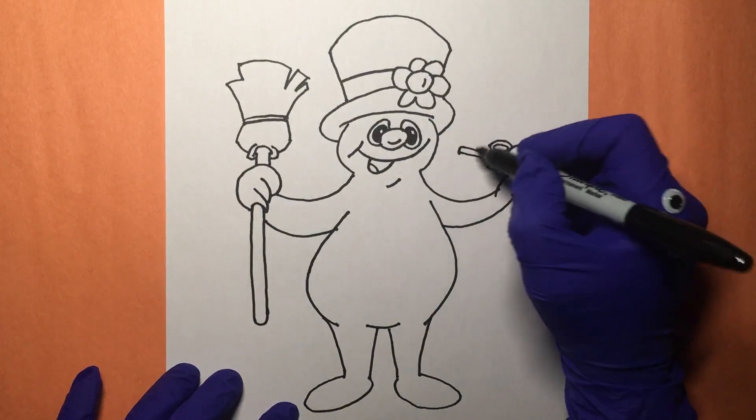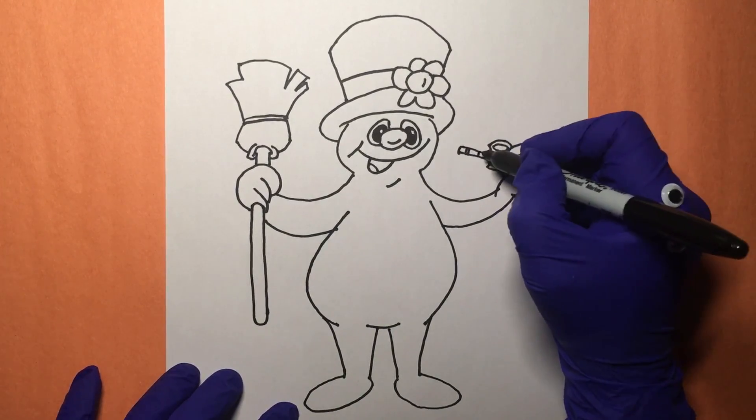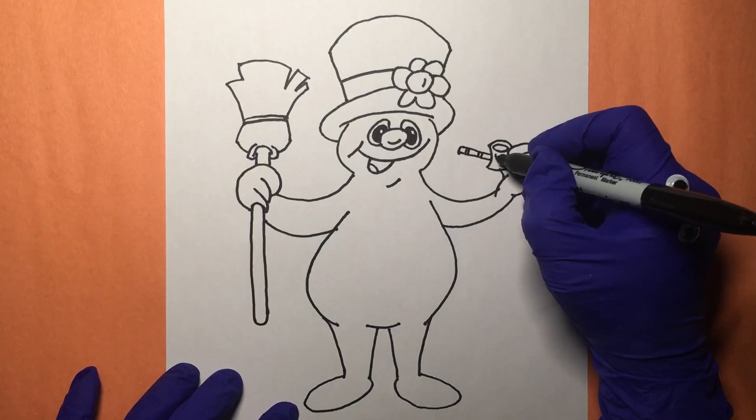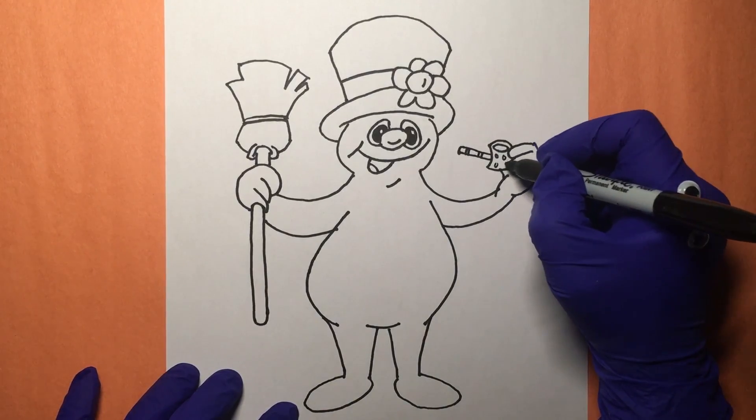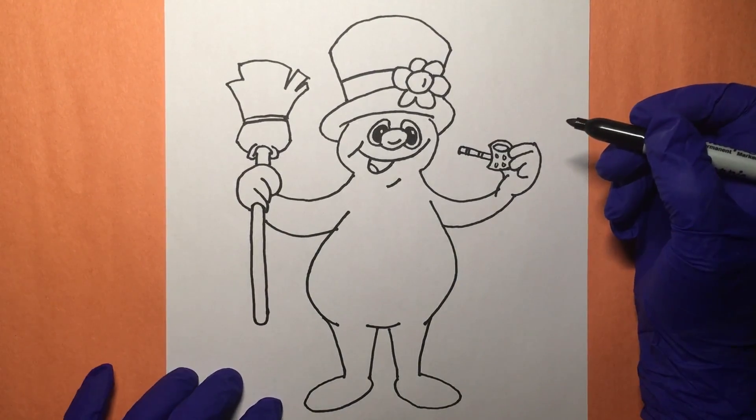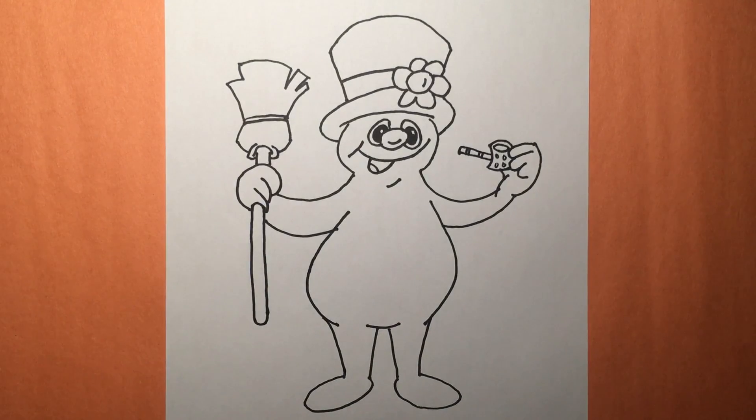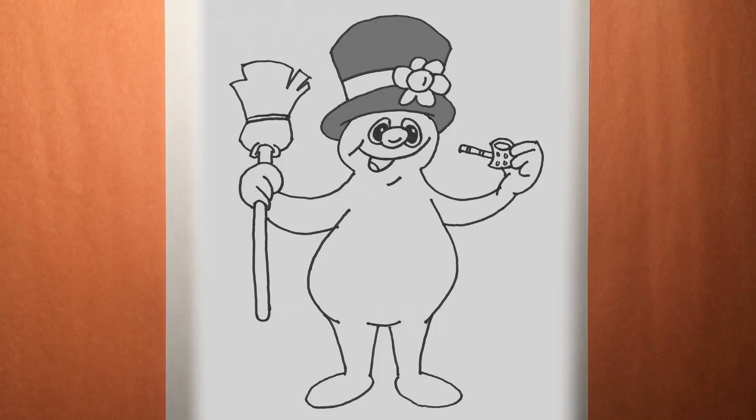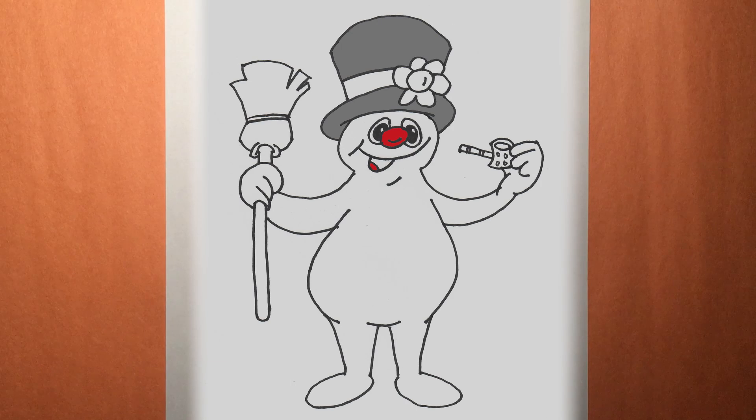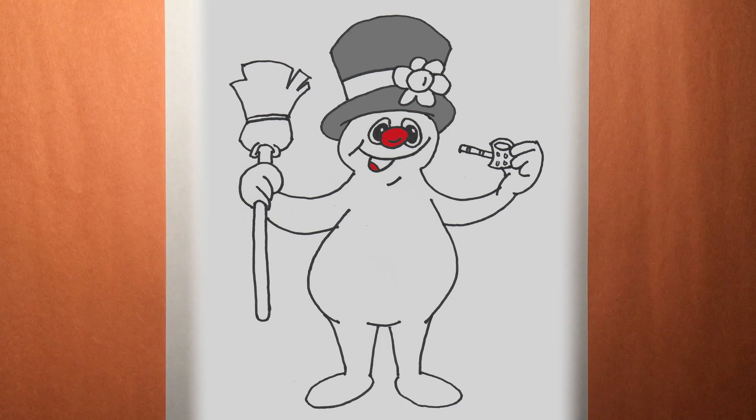There we go, a little decoration here, and maybe some circles in there. Lovely. Now we can do the color. Gray, gray for his old hat. I like it. Red for his button nose and tongue.